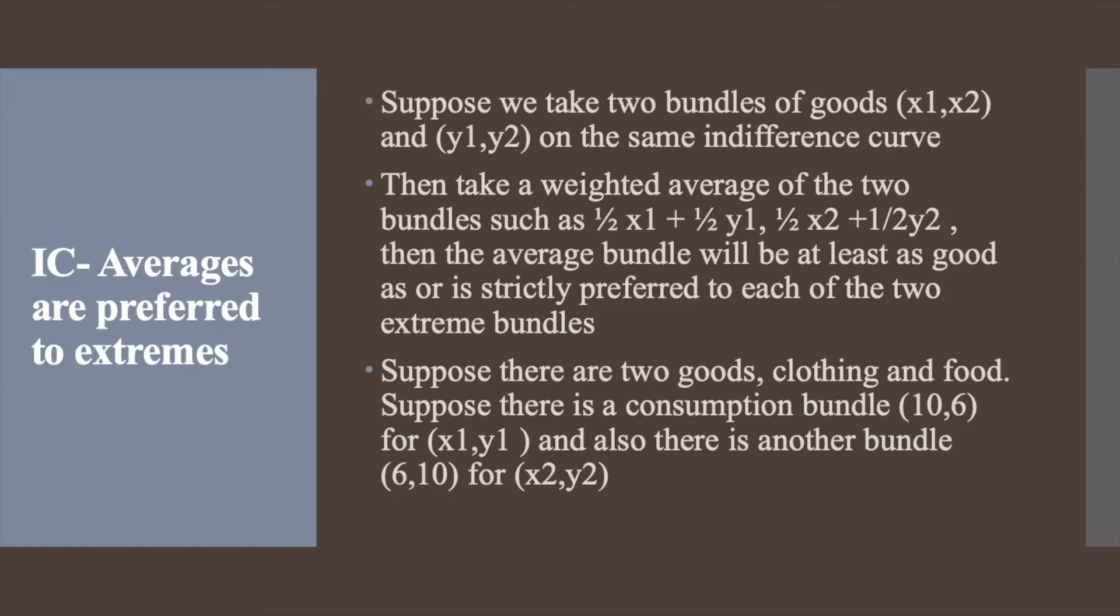Such as (½x1 + ½y1, ½x2 + ½y2), then the average bundle will be at least as good as or strictly preferred to each of the two extreme bundles.